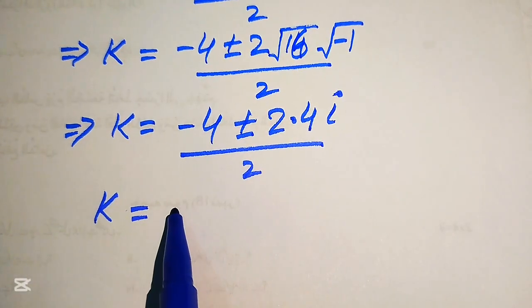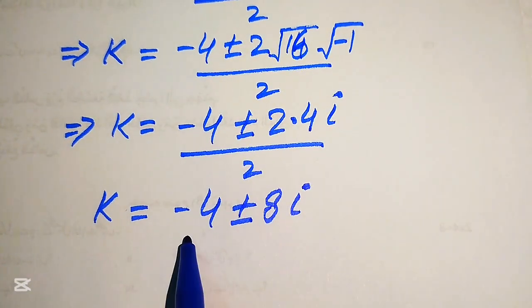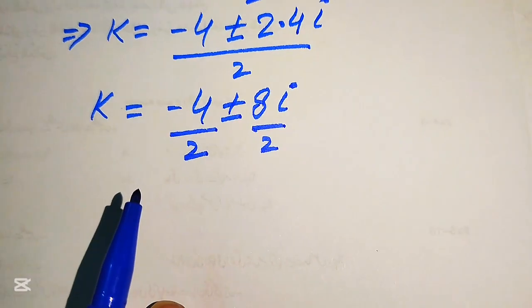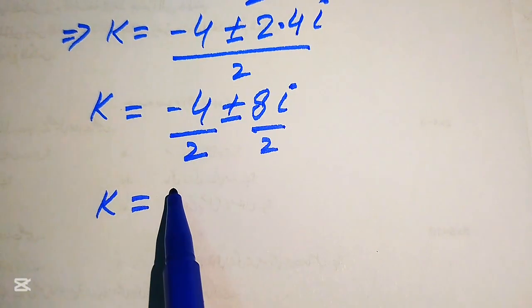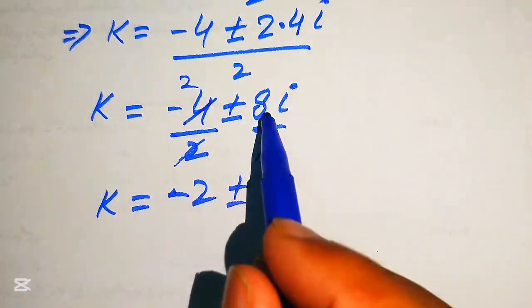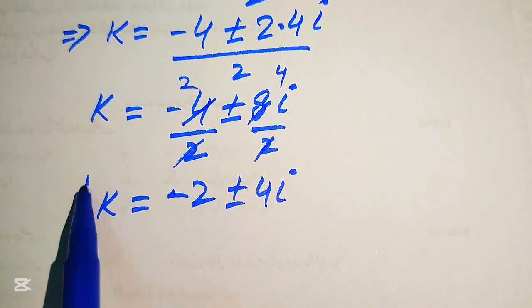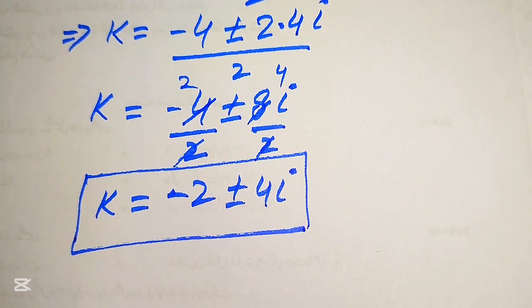So k = (-4 ± 8i) / 2. Breaking the fraction, we get the two complex roots: k = -2 + 4i and k = -2 - 4i. These are the other two complex roots of the given equation. This is the final answer. Thank you so much for watching — please subscribe to my channel for more exciting videos.